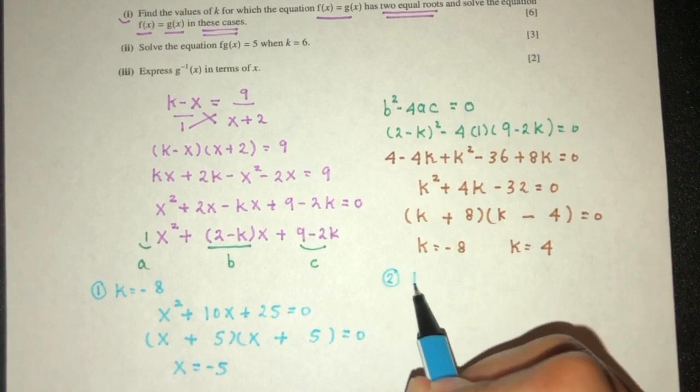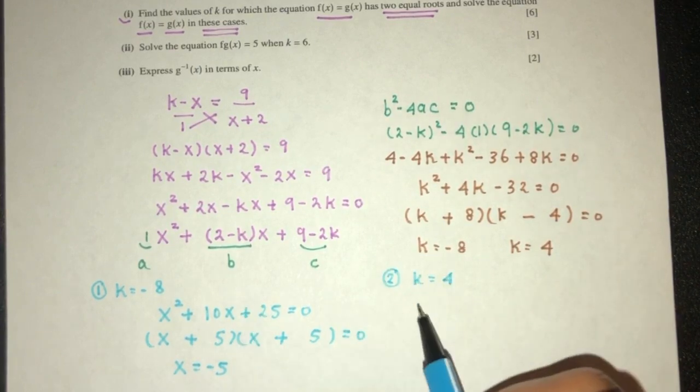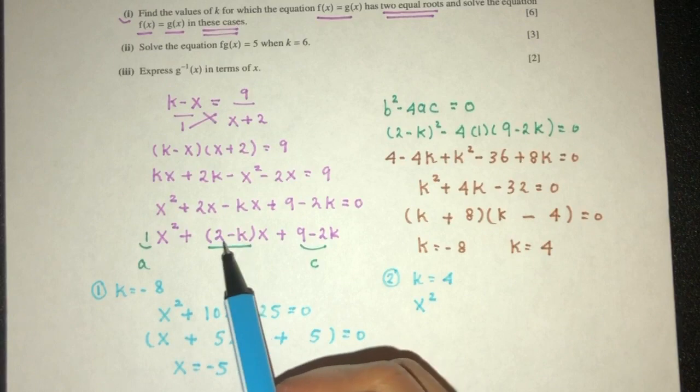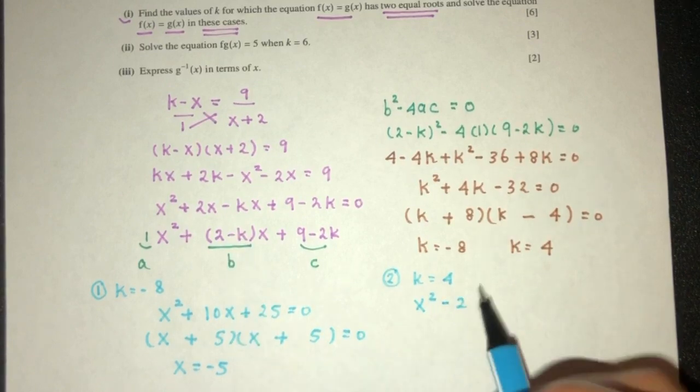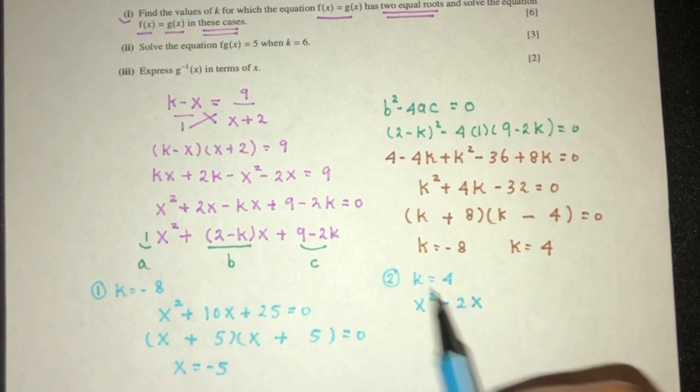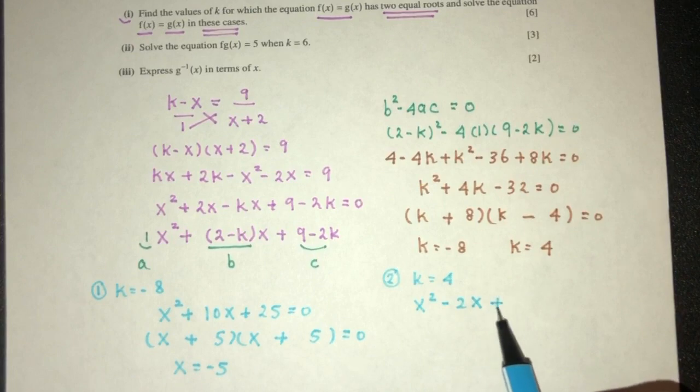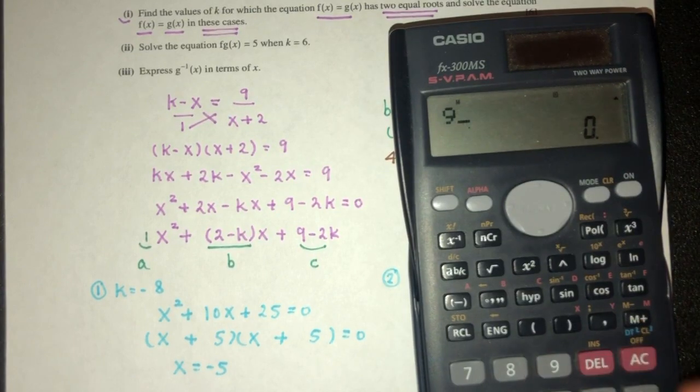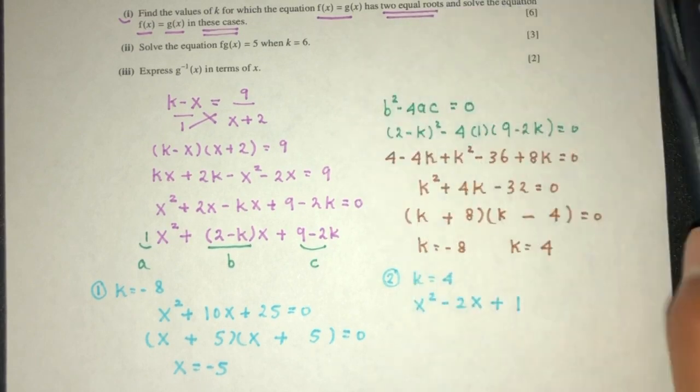Now in the case of k equals to the value of 4, what do we have? We have x² + (2 - k) should be -2x. And then 9 - 8 should be plus 1. So 9 - 2 times 4 should be just 1.